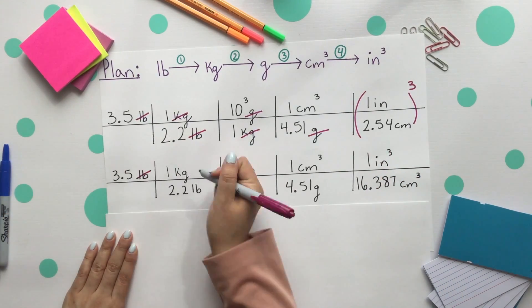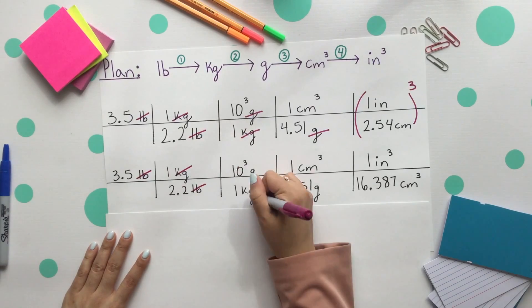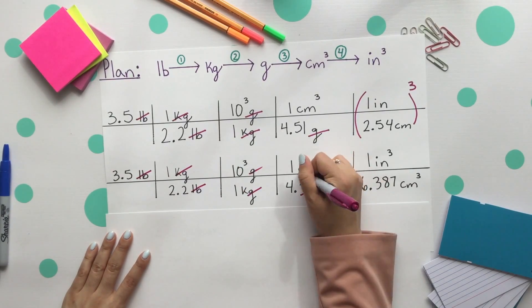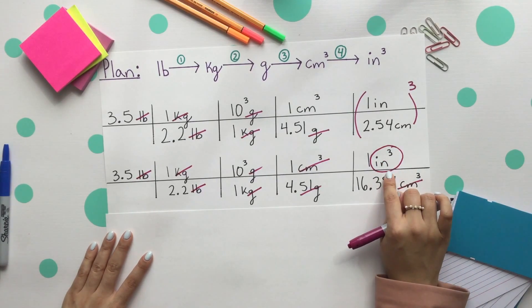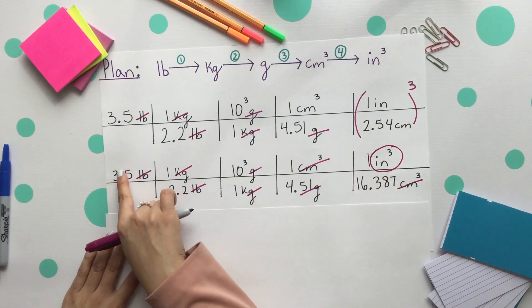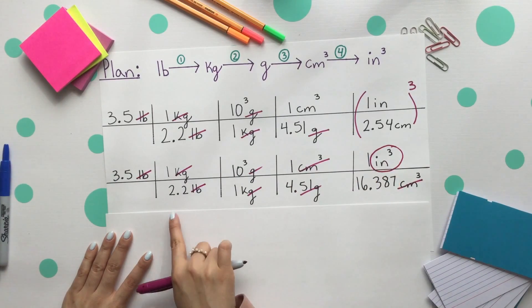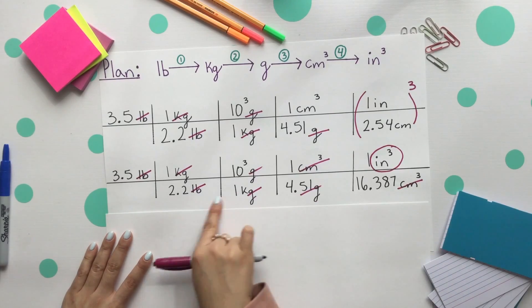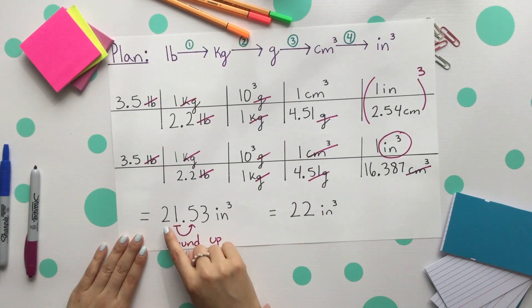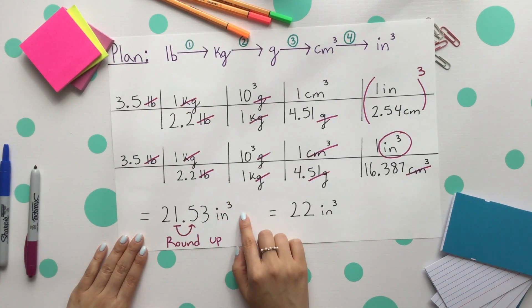Let's cancel all the different units. So our pounds cancel, kilograms, grams, and cubic centimeters finally cancel, leaving us with the unit that we were finding all along: cubic inches. Multiply straight across and divide by 2.2, 4.51, and 16.387 all multiplied. You get 2.53 cubic inches.